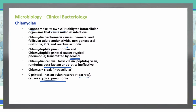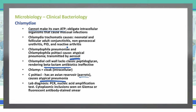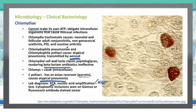To diagnose chlamydia we need a lab test. Specifically, we can do a PCR or nucleic acid amplification test, often abbreviated NAAT. We'll also see cytoplasmic inclusions on a Giemsa or fluorescent antibody stain smear. In this picture you can see those brown inclusion bodies in a McCoy cell culture.